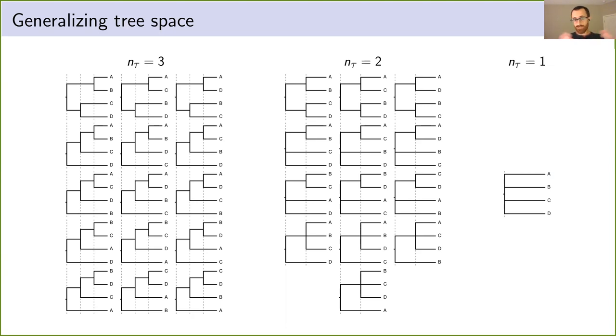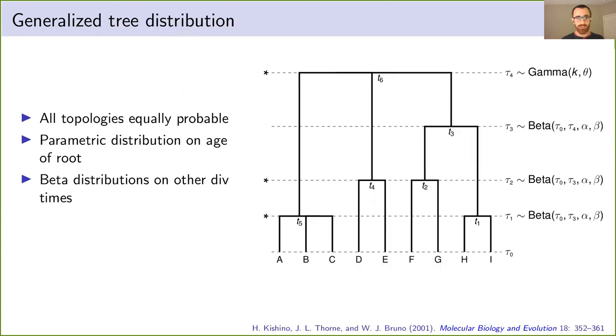To do that, we have to create a distribution across all of these trees. To do that, we assumed they were all equally probable. We put a parametric distribution on the age of the root and used scaled beta distributions for all the other divergences. That's glossing over some details here, but that's the general idea of putting a distribution on this expanded space of trees.